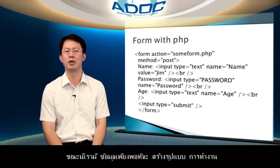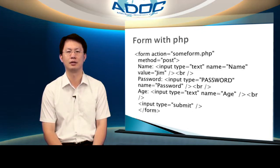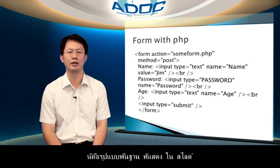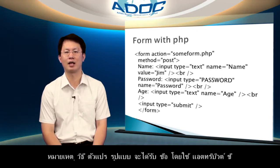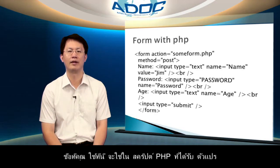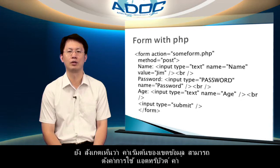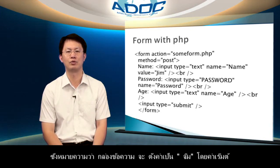We now have enough information to construct a working form, so we will start off with something fairly basic, then afterwards put together a more complicated form that we can examine in depth. Here is the basic form shown in the slide, that will submit three variables to some_form.php: name, password, and age. Note how form variables are given names using the name attribute — the names you use here will be used in the PHP script that receives the variables. Also notice that the default value of a field can be set using the value attribute, which means that the name text box will be set to 'Gene' by default.